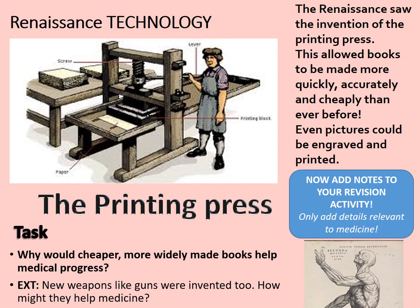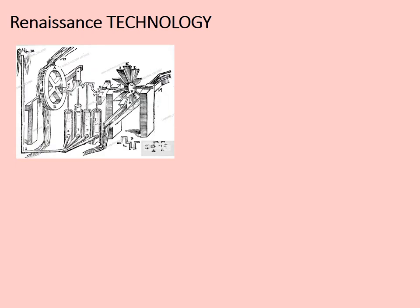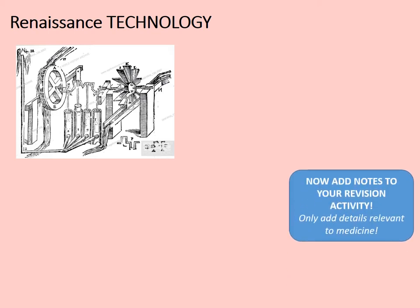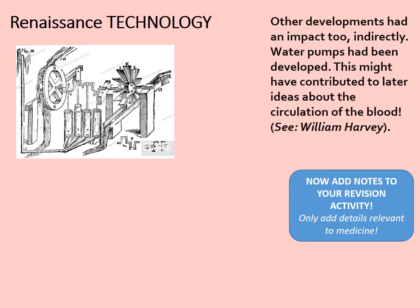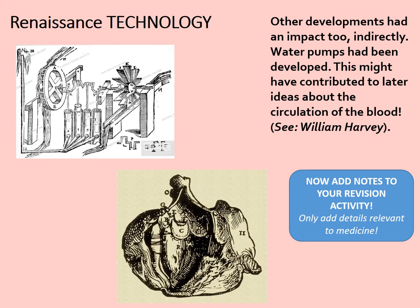Here we see an engraving of a Renaissance water pump. Relationships were seen between the way the water pump works and the way certain parts of the body worked, so some connections with technology were rather more indirect. Water pumps had been developed, and this may have contributed to later ideas about the circulation of the blood. William Harvey may have drawn inspiration from machines like this. Compare the water pump diagram with the human heart — just as the pump has different chambers, so the heart has different chambers pumping blood to different parts of the body in a circular motion.